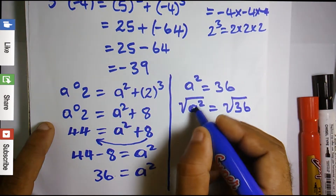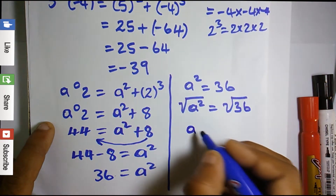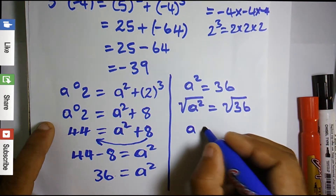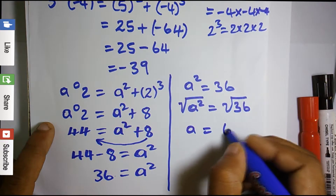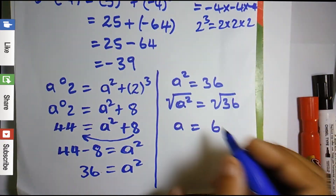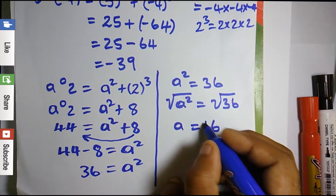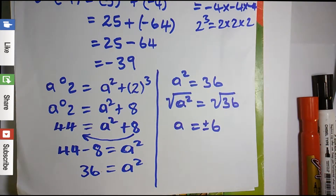The square root of a² is 'a', and the square root of 36 is 6. Since we're not referring to length or anything like that, we include plus or minus. So a = ±6.